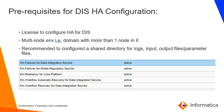Now let us see the prerequisites needed for DIS-HA configuration. The first and most important one is the multi-node environment — users should have a domain with more than one node. Second, you should have a license to configure HA for DIS. The HA failover for data integration service is the licensing option that needs to be active in the domain. You may have multiple other options as well, but for the basic HA concept of DIS, you need HA failover for data integration service.